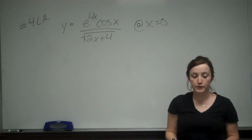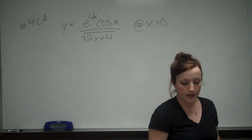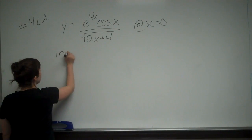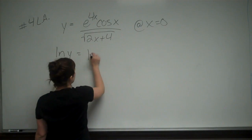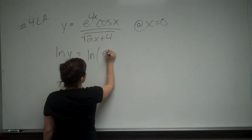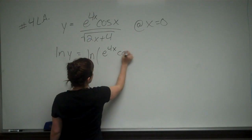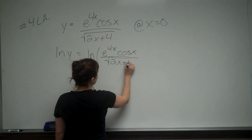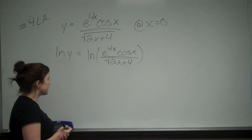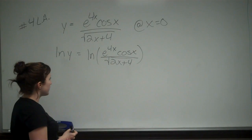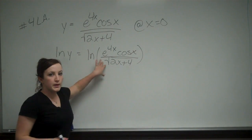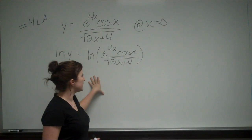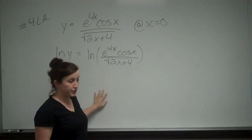Logarithmic differentiation means we're going to take the natural log of both sides. So we take the ln of y equal to the ln of e to the 4x cosine x over the square root of 2x plus 4. Now we're going to differentiate both sides, but first we can expand this into single logarithmic expressions, which will make our differentiation a lot easier.